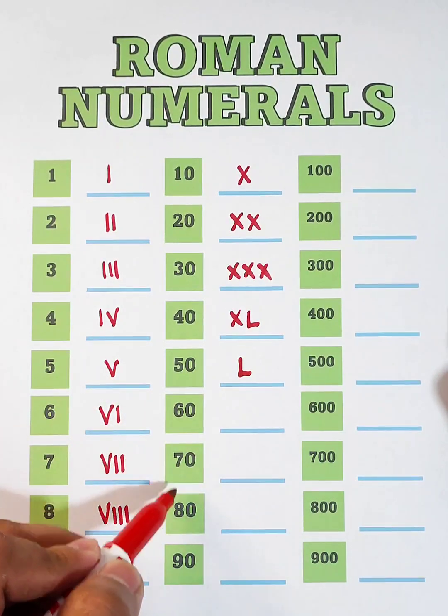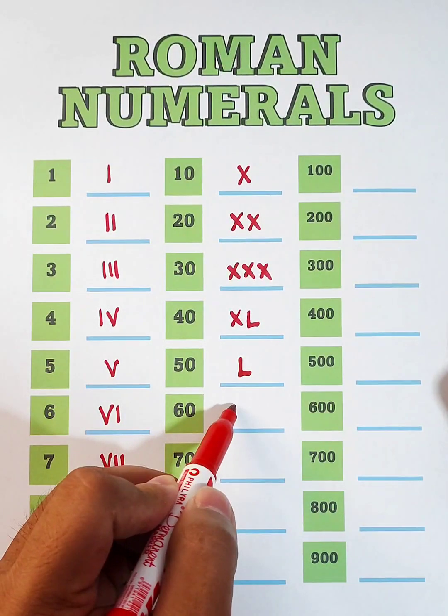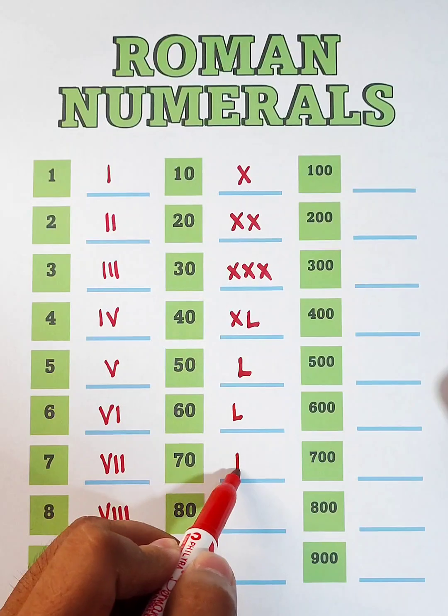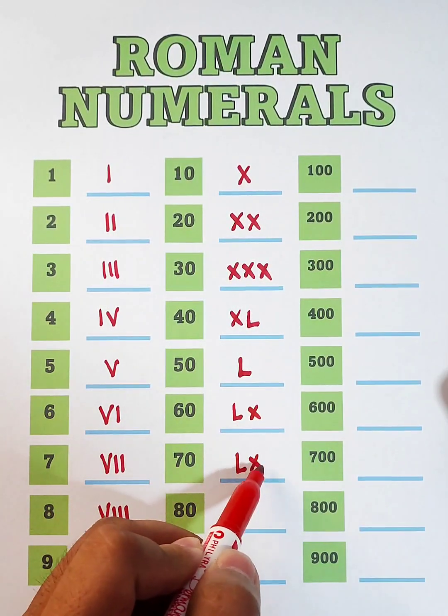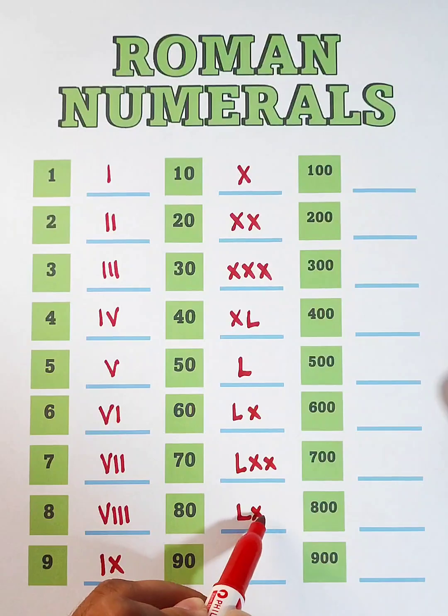For 60, 70, and 80, we will put 50 plus 10, 50 plus 20, and 50 plus 30.